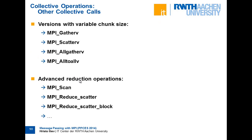Gather, scatter, all-gather, and all-to-all all work with chunks of the same size. If your buffer size is not divisible by the number of ranks, you can use the variable-length versions: MPI_Gatherv, MPI_Scatterv, MPI_Allgatherv, and MPI_Alltoallv. These allow you to specify exactly how many elements go to each rank, enabling uneven subdivision. There are also additional operations like scan, reduce-scatter, and reduce-scatter-block available in the standard.